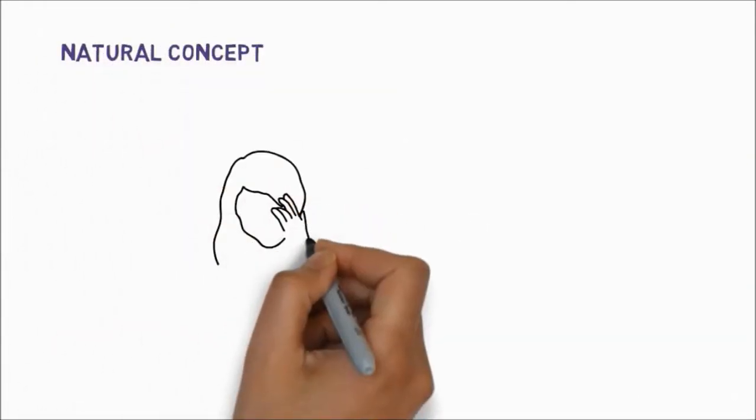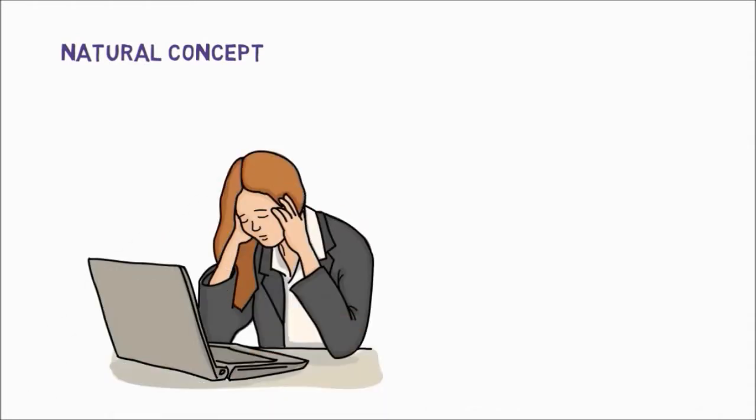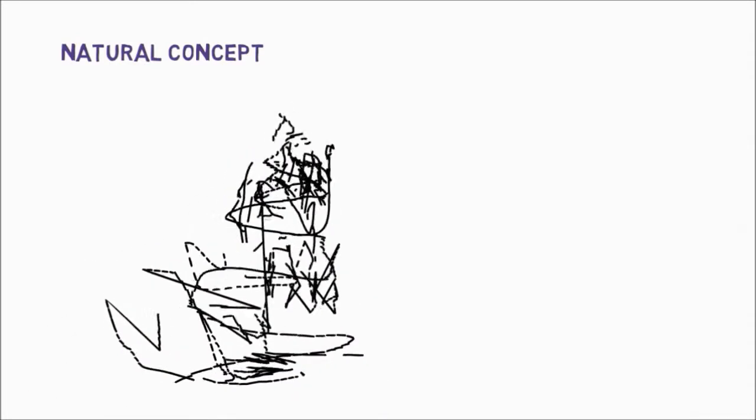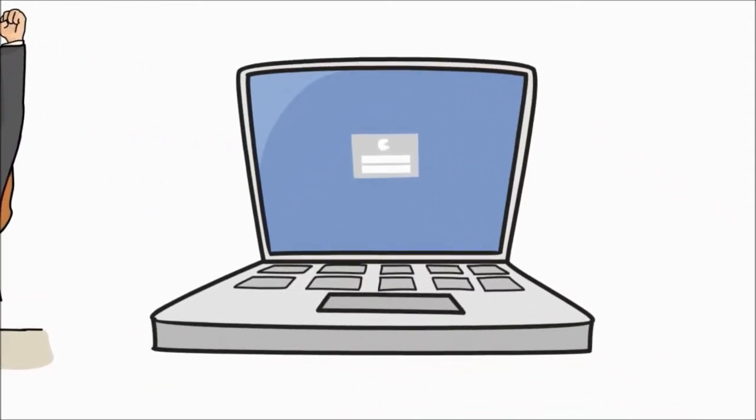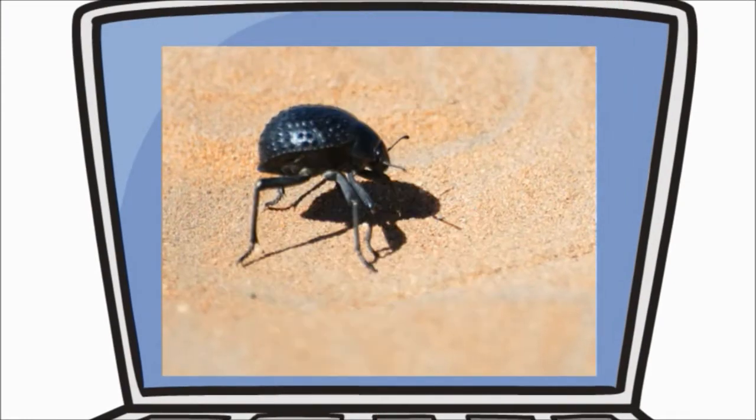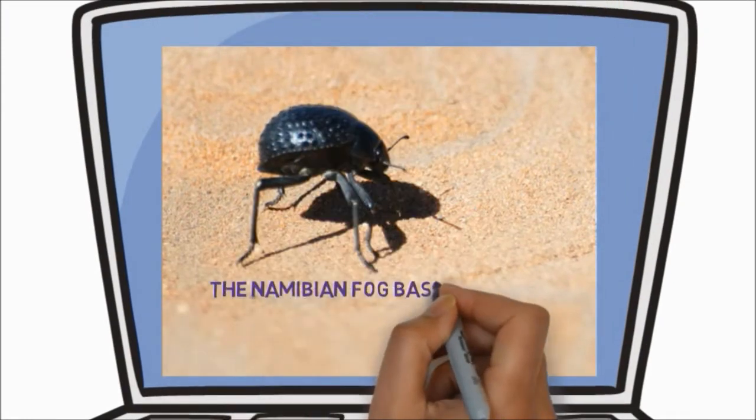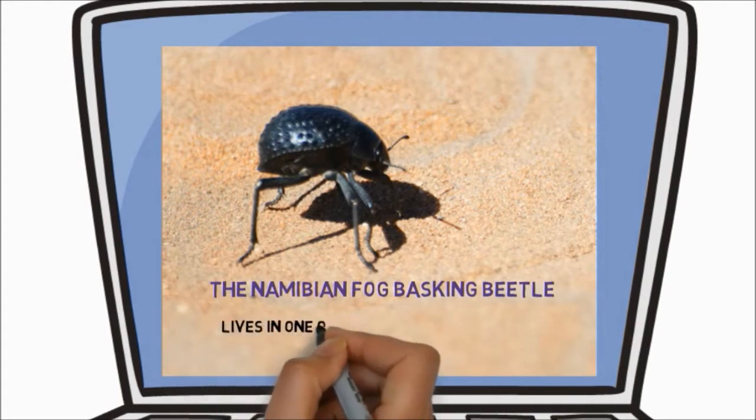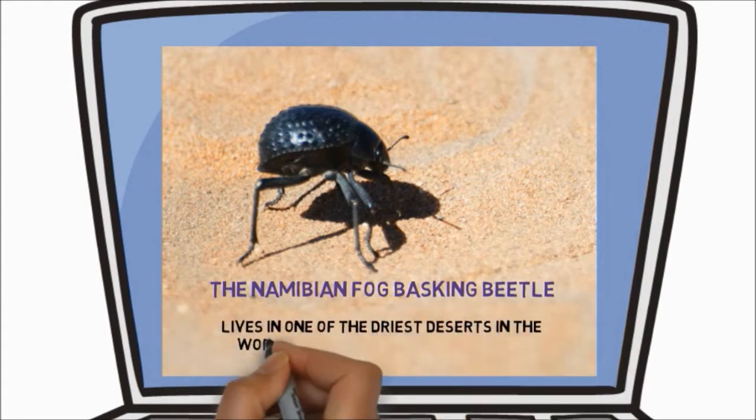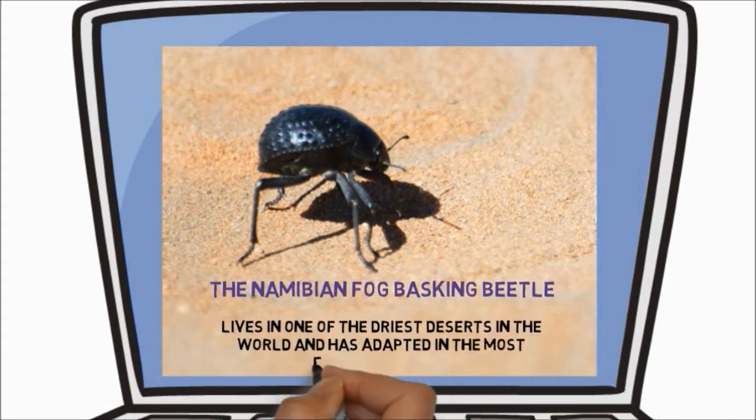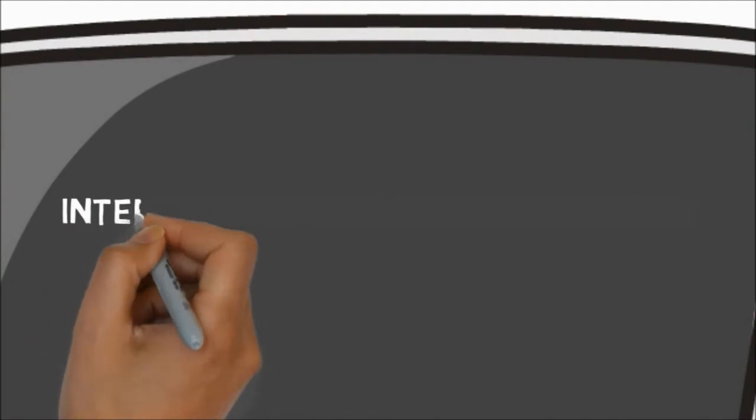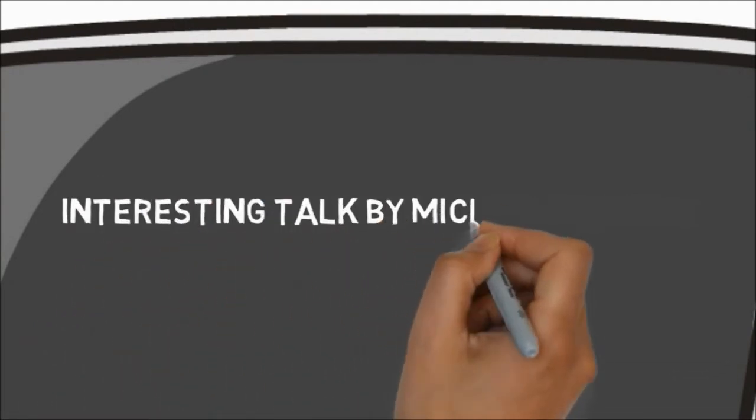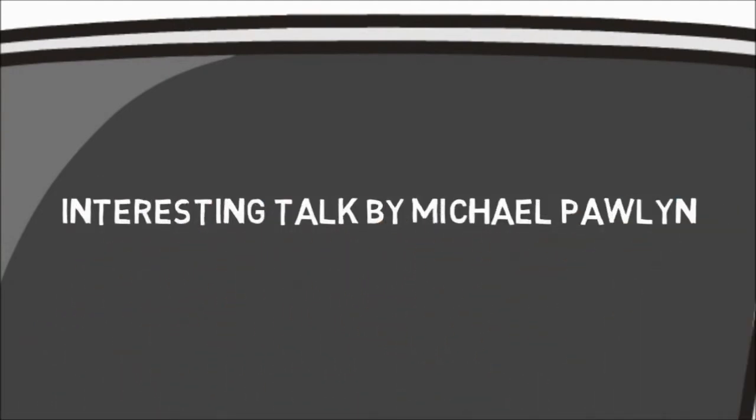After a lot of research on selecting a natural concept, finally it was decided on a very interesting creature called Namibian Fog Basking Beetle. The Namibian Fog Basking Beetle lives in one of the driest deserts in the world and has adapted in the most efficient manner. Let me share with you an interesting talk by Michael Pollan about this fascinating creature.